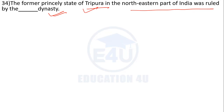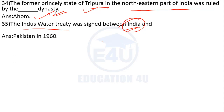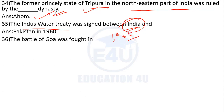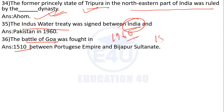The former princely state of Tripura in the northeastern part of India was ruled by the Manikya dynasty. The Indus Waters Treaty was signed between India and Pakistan in 1960.